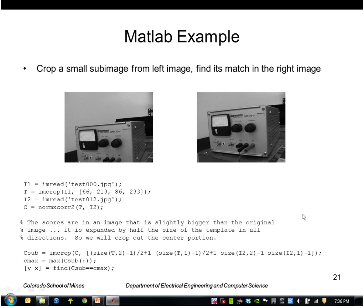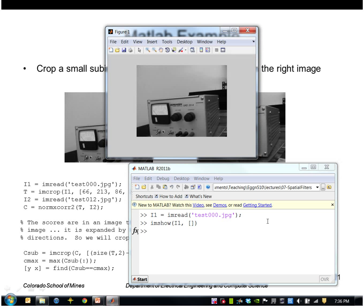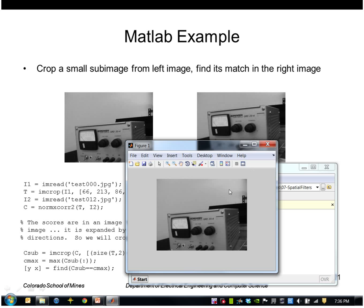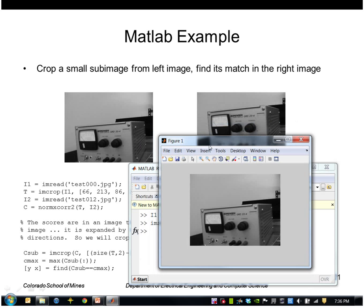Okay, let's do an example of normalized cross-correlation in MATLAB. I'll read in an image here called I1 and I'll extract a little region from somewhere in here and try to find it in another image I2.